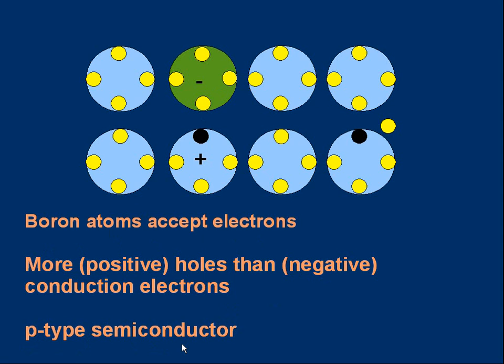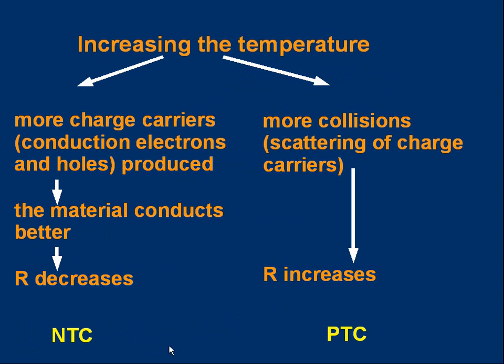Now let's get back to temperature. What happens if we increase the temperature? Well, there are two things to think about. First of all, more charge carriers, that's conduction electrons and holes, are produced. We've seen how that happens. And if there's more of them, it makes the material a better electrical conductor, which means the resistance decreases. That makes it an NTC, negative temperature coefficient material. If the temperature increases, the resistance decreases. It's NTC.